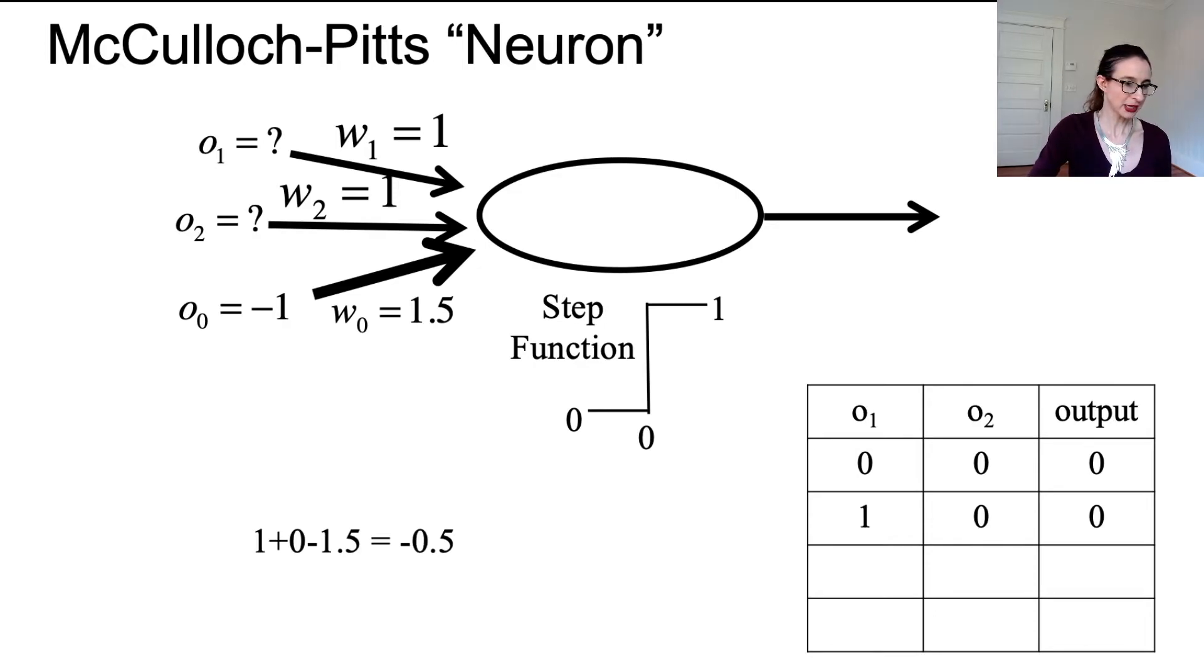Let's say that I make O_1 equal to 1. What happens then? In that case I have 1 times 1 plus 0 plus negative 1.5 and again that sum is not positive. So the neuron doesn't spike.